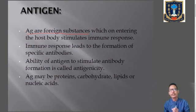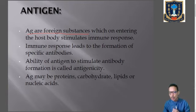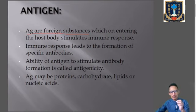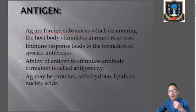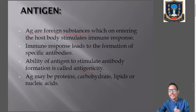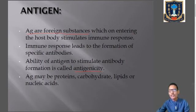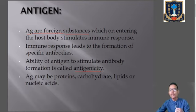Whenever an antigen enters our body, the body starts producing antibody and showing immune response. The property of an antigen that leads to the formation of a specific antibody or triggers an immune response in an individual is known as antigenicity. Antigenicity is the ability of an antigen to stimulate antibody formation or to trigger immune response in an individual organism.